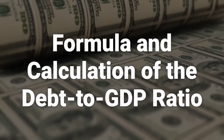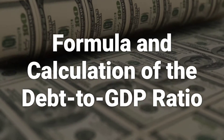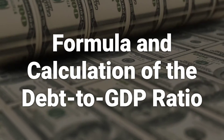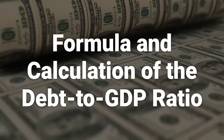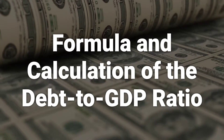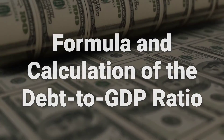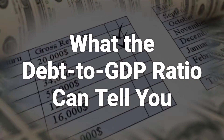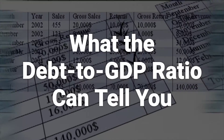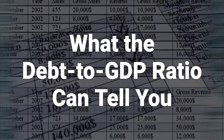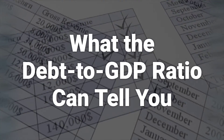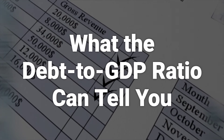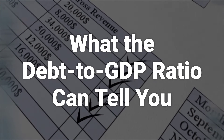The debt-to-GDP ratio is calculated by dividing the total debt of a country by its total GDP. A high ratio indicates difficulty in paying off external debts, leading to higher interest rates when borrowing. A higher debt-to-GDP ratio increases the risk of a country defaulting on its debt, which can cause financial panic in domestic and international markets.